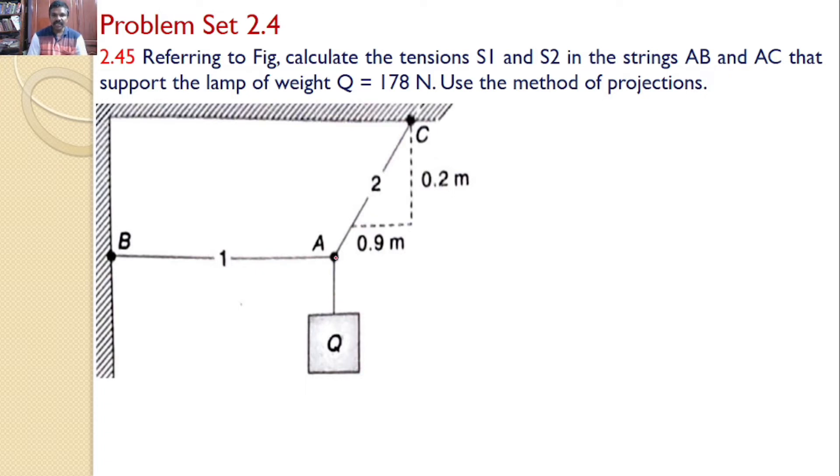So let us consider the free body diagram at point A. Let us see what are the various forces that are acting at point A. The first force, of course, the self-weight of the lamp that is Q.